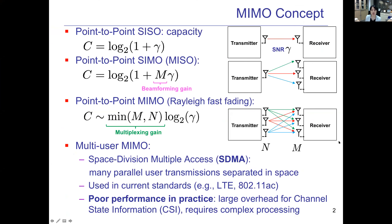First, let's review the general MIMO concept. If we consider a point-to-point SISO system with one transmitter, one receiver, and one antenna each, with link SNR gamma, the capacity is given by the well-known Shannon expression: log base 2 of 1 plus SNR. Then if we consider multiple antennas at either the transmitter or the receiver, we get a SIMO or MISO link, and the SNR gamma is multiplied by the number of antennas M — this is called the beamforming gain.